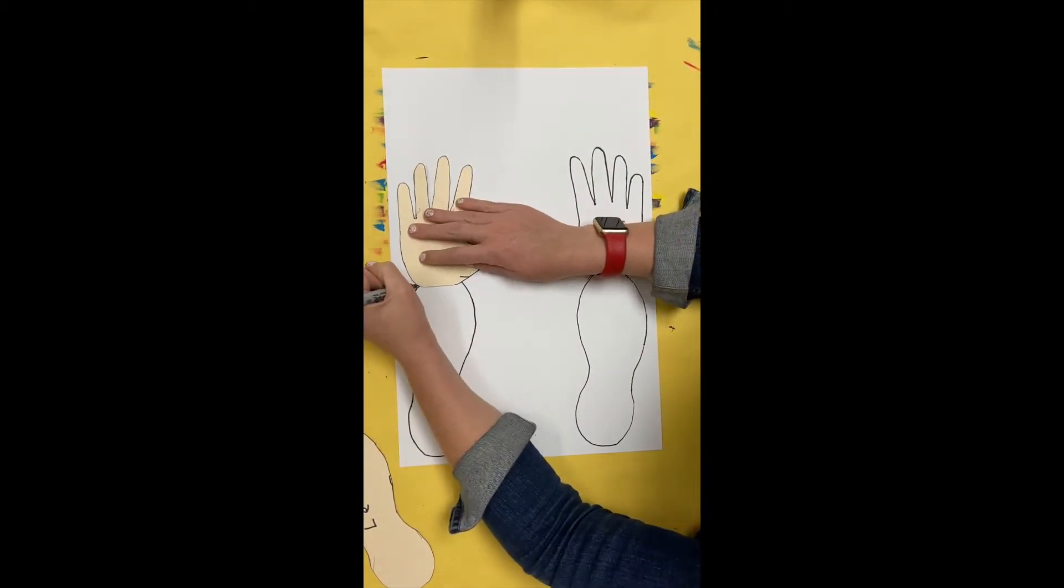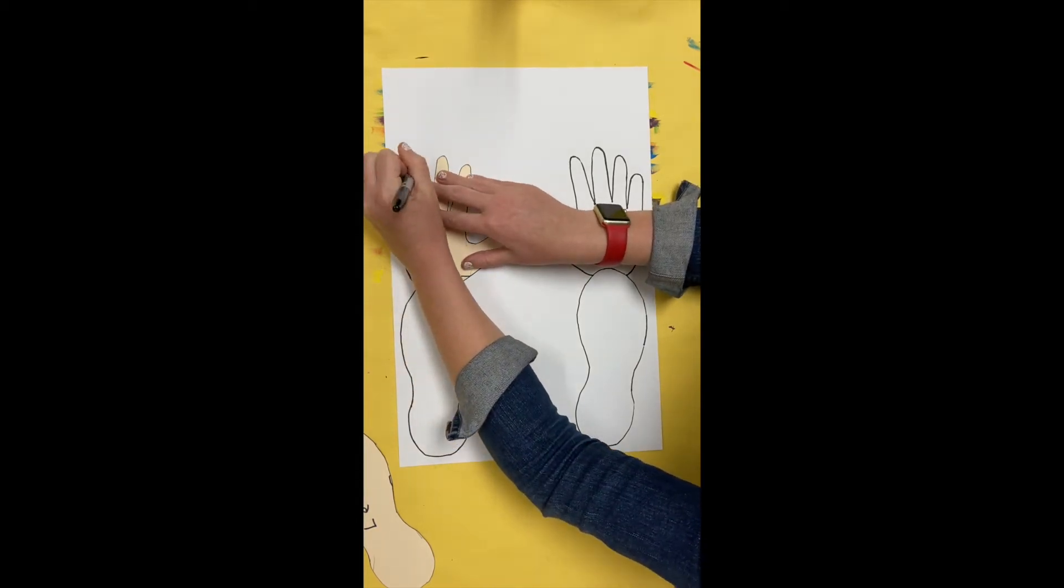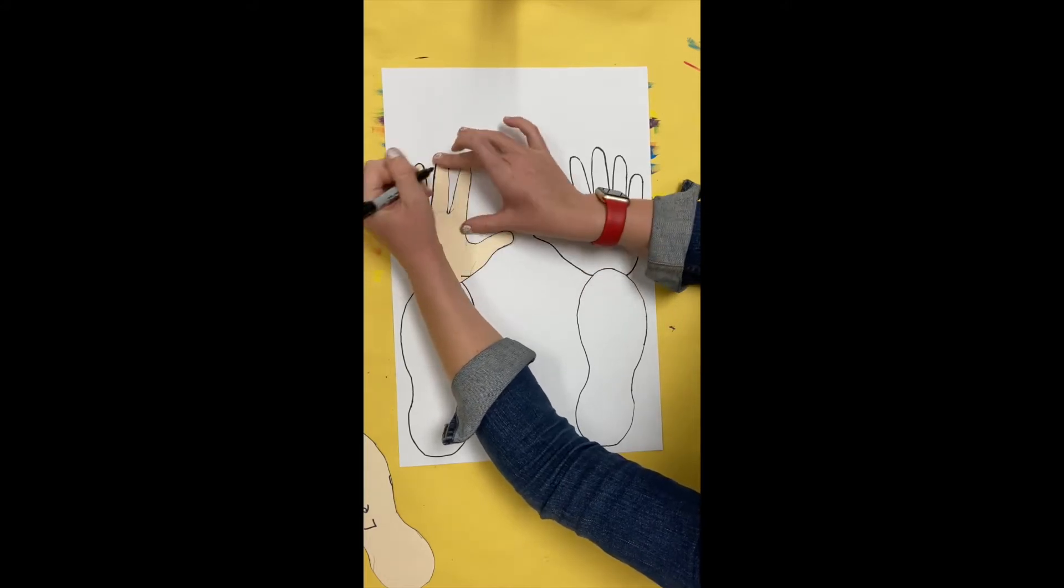Flip the hand over, making sure the thumb is pointing towards the middle, and trace around it again. Go carefully, slowly, and neatly.